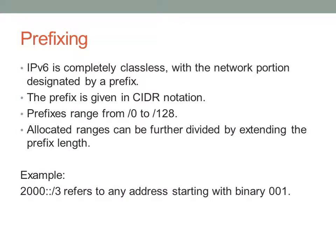For example, 2000::/3 refers to any binary address starting with 001. We look at the first three bits of the address — those are the important bits — so any address starting with 001 followed by any combination of the remaining 125 bits will fall in that range. The rest of the bits don't matter.